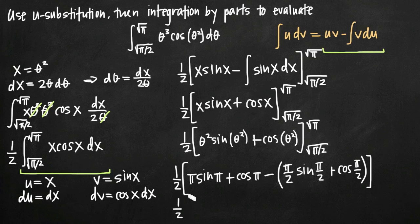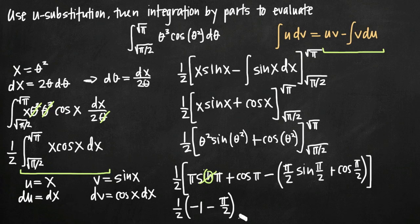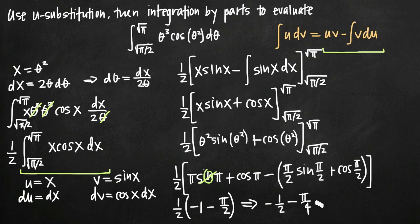Now we evaluate: sine of pi is 0, so pi times 0 is 0 — that term goes away. Cosine of pi is negative 1. Then sine of pi over 2 is 1, so 1 times pi over 2 is pi over 2. Cosine of pi over 2 is 0, so that term vanishes. We're left with one-half times negative 1 minus pi over 2. Distributing the one-half gives us negative one-half minus pi over 4. That's our final answer.